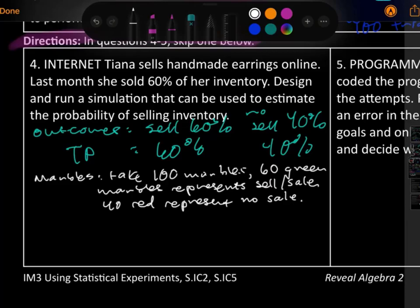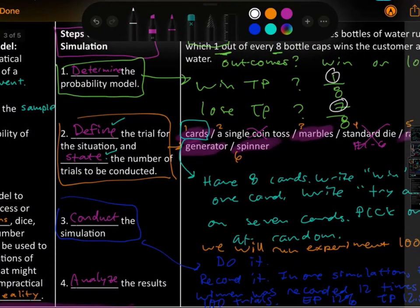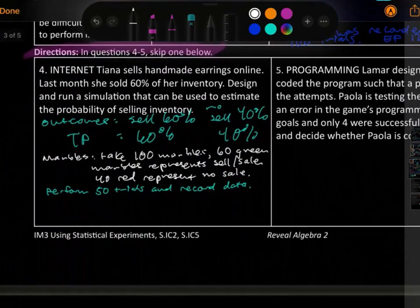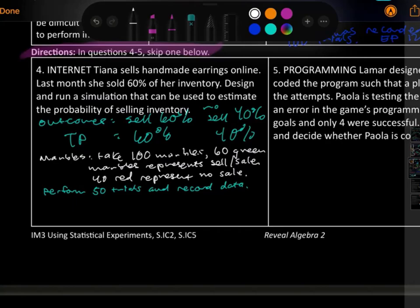Which would you guys use? You can use any of those. I like, let's pick marbles. Let's just say take 100 marbles, and I really like the colors green and red. Green means go, red means stop, right? So 60 green marbles represents she makes a sale. 40 red represent no sale, stuck in her inventory. Does that make sense? So we can perform, you can have as many times as you want, perform 50 trials and record data.